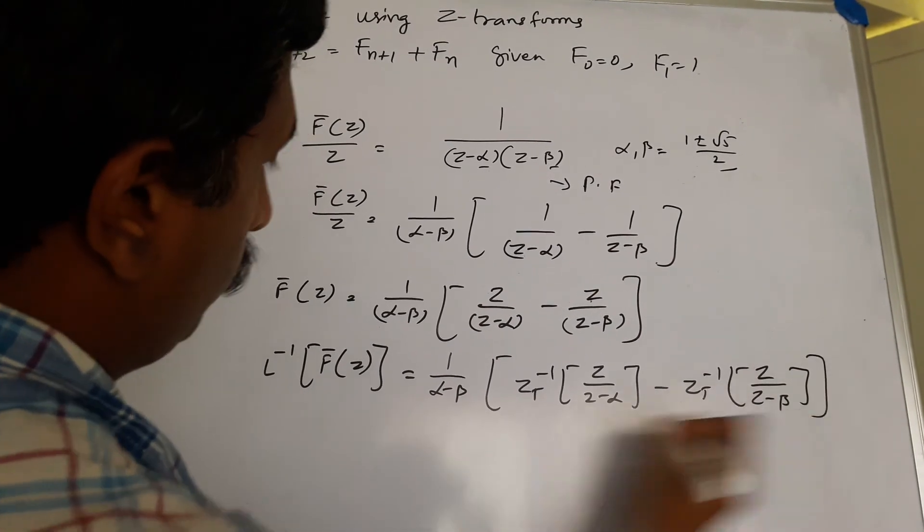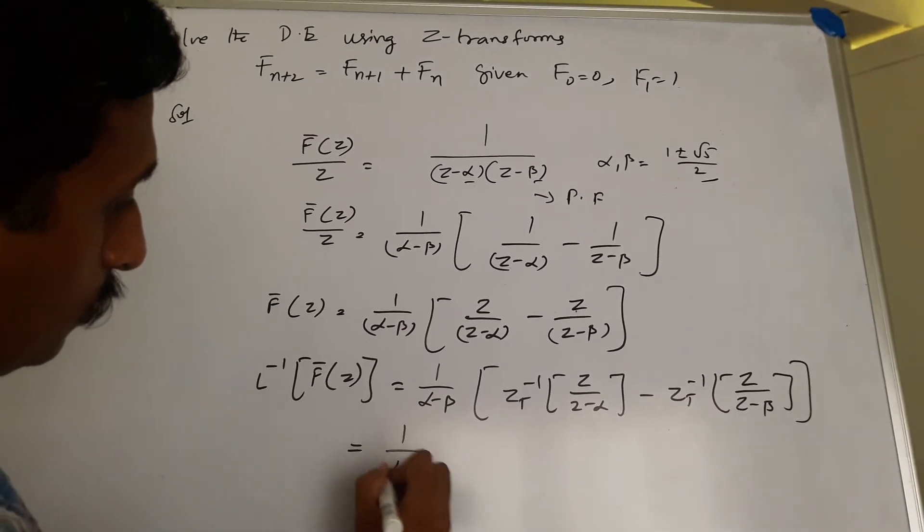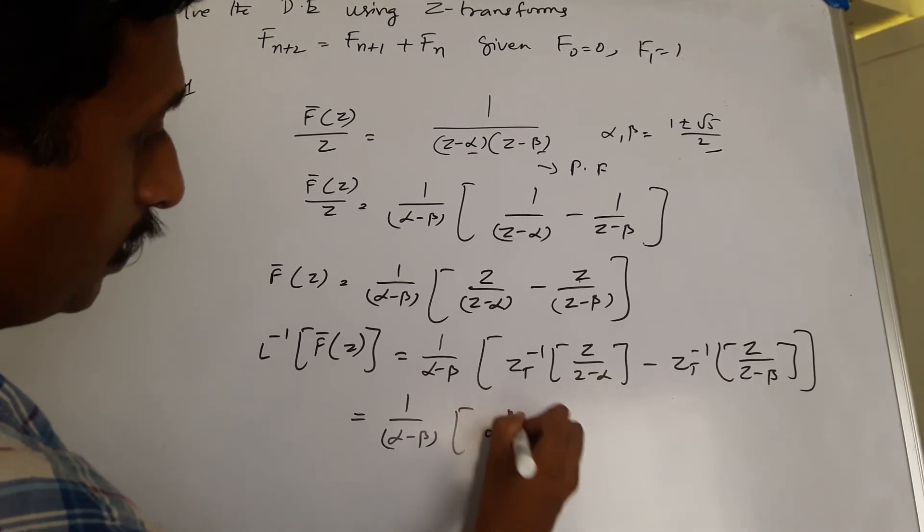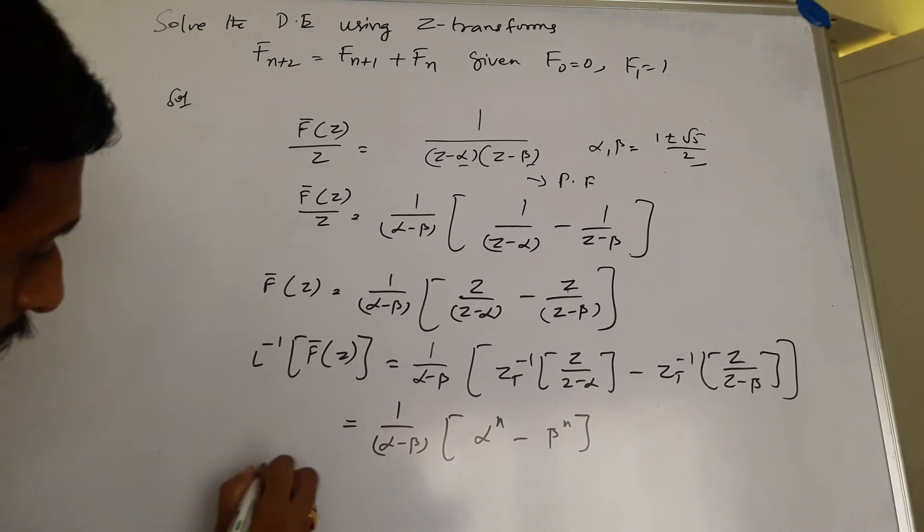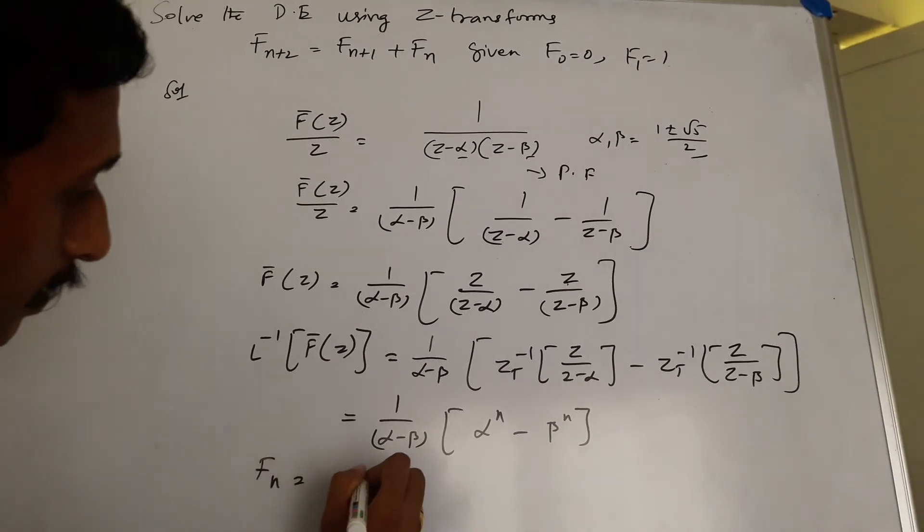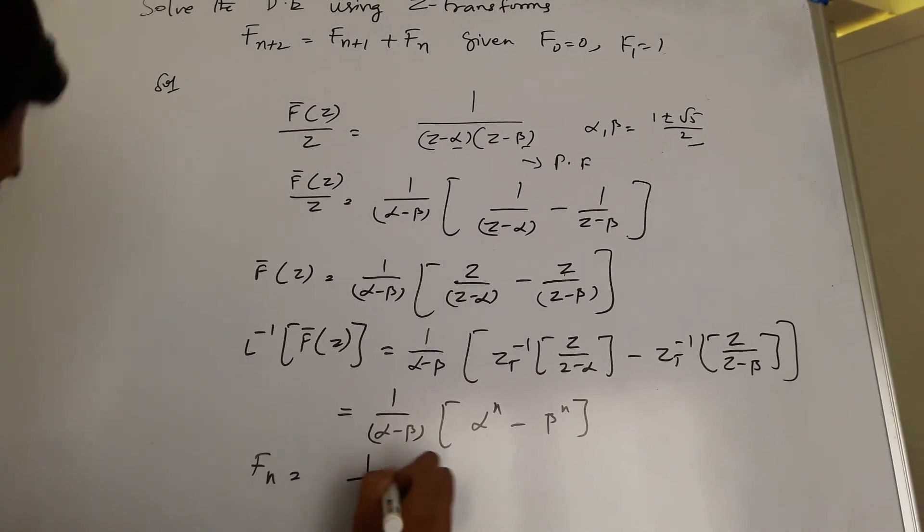Now this results in α^n and β^n. And this is f_n, and this will be 1/√5.